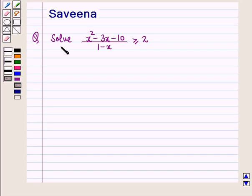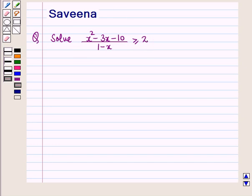Hello and welcome to the session. In this session we will discuss a question: solve (x² - 3x - 10) / (1 - x) ≥ 2. Now let us start with the solution of the given question.